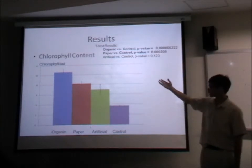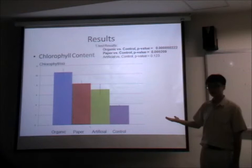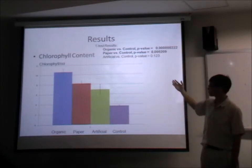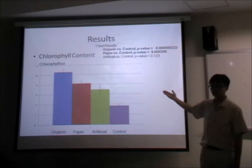The chlorophyll content index (CCI) for the organic and paper setups are much higher than the artificial and control setups. The t-test results also show that organic versus control and paper versus control comparisons are statistically significant.